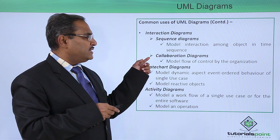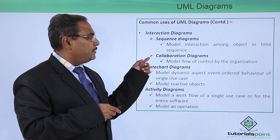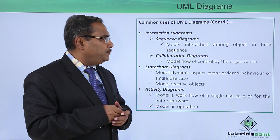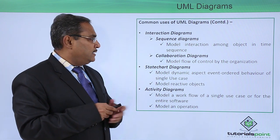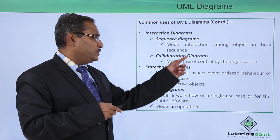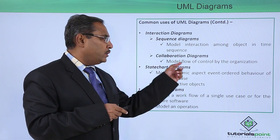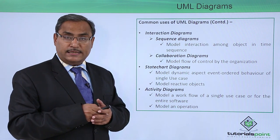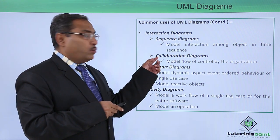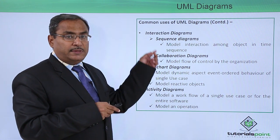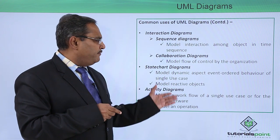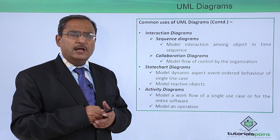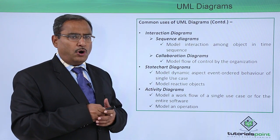The interaction diagram has two varieties: the sequence diagram and the collaboration diagram. The sequence diagram models interaction among objects in a time sequence, while the collaboration diagram models the flow of control by organization. Each of these diagrams has a separate chapter in this tutorial.